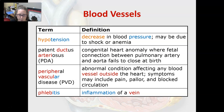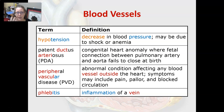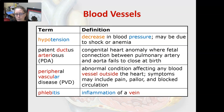Patent ductus arteriosus, or PDA, is a congenital heart anomaly where the fetal connection between the pulmonary artery and the aorta fails to close at birth. The fetus receives its oxygen supply from the placenta rather than its lungs, so fetal circulation is quite different. Normally this connection closes at birth, and if it doesn't, the baby has patent ductus arteriosus.